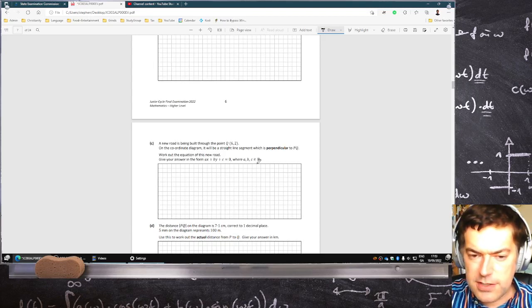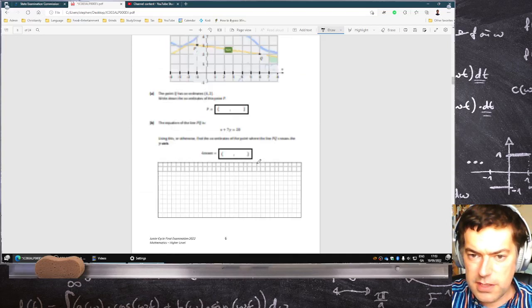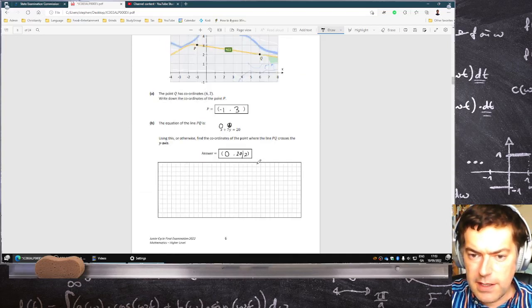A new road is being built at 6, 2. On the coordinate diagram, we have a straight line which is perpendicular to PQ. Work out the equation of the new road, 6, 2.